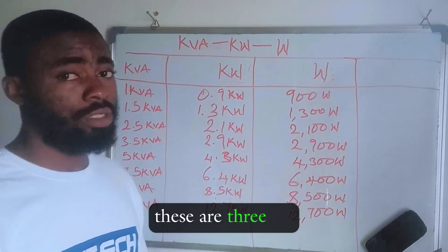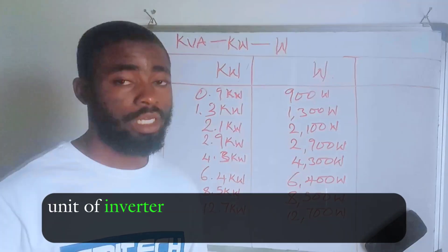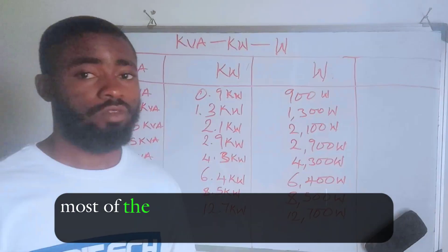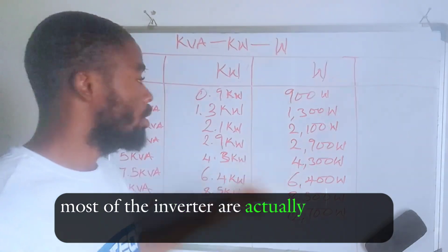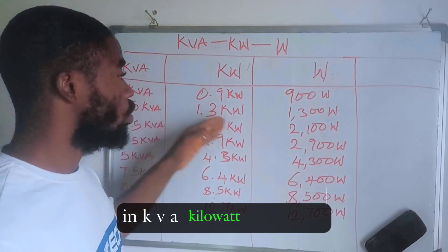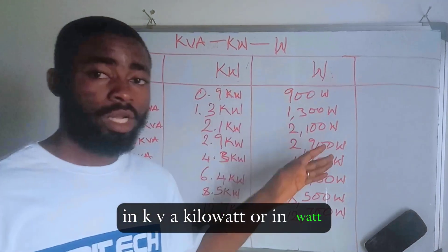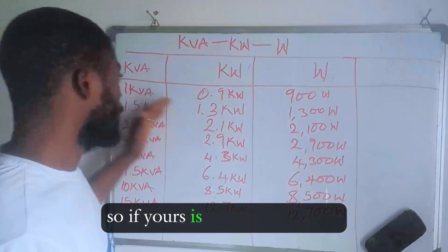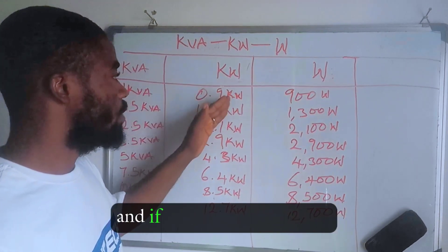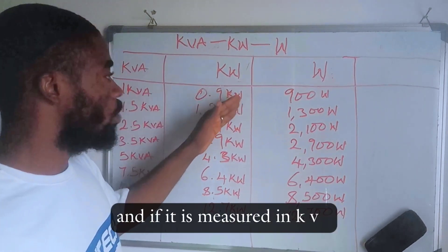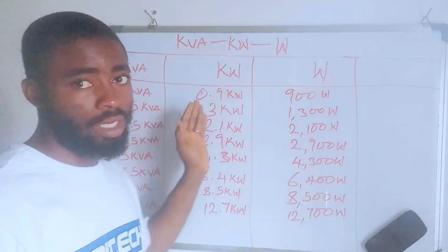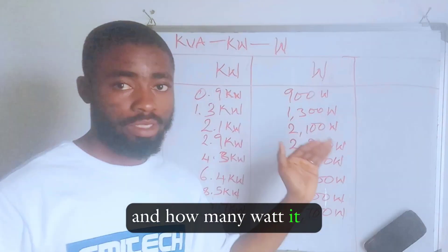These are the three main units of inverter measurement. Most inverters are measured either in kVA, kilowatt, or watts. So if yours is measured in kVA, you now know how many kilowatts it is, and if it is measured in kilowatt, you know how many kVA and how many watts it is.